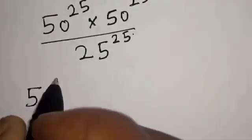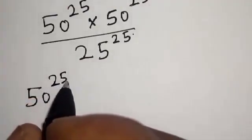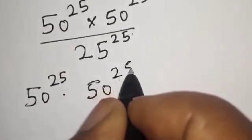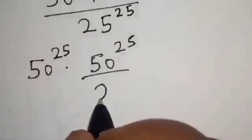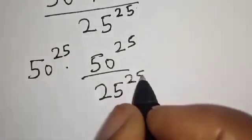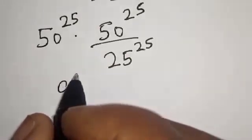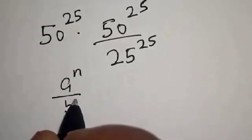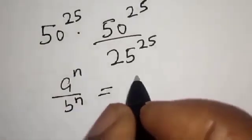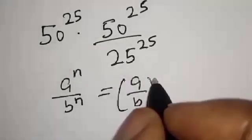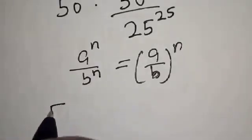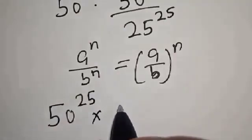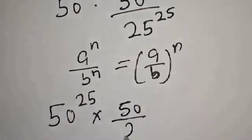We have 50 raised to power 25, then multiply by 50 raised to power 25 over 25 raised to power 25. Applying the rule: a raised to power n over b raised to power n equals a over b raised to power n. So this becomes 50 raised to power 25 multiplied by 50 over 25 raised to power 25.